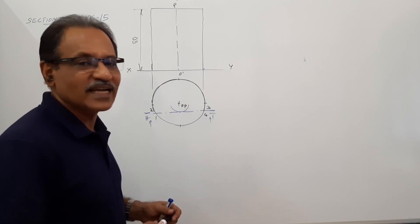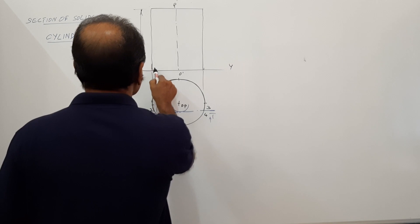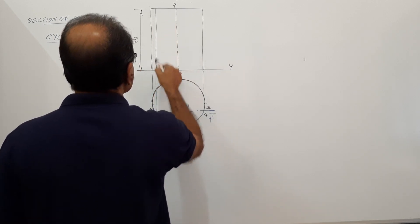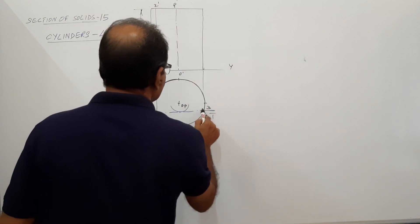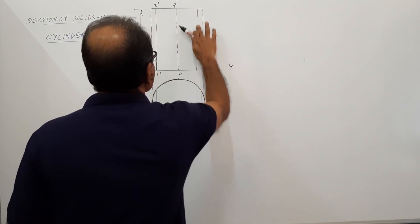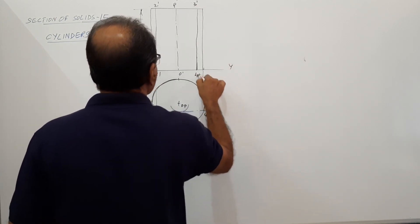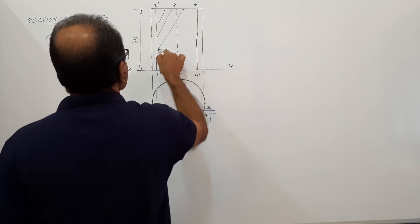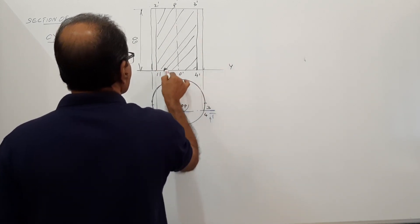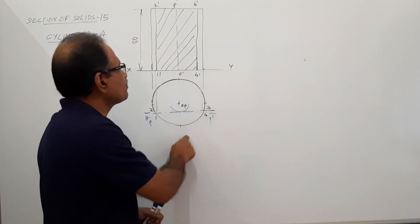Now you have to draw the sectional elevation. What do you do? Project 1, 2, up. Exactly on top of that is 2 dash. Project this up. 3 dash and 4 dash. Hatch this. What have you completed? You have completed the sectional elevation. This is sectional plan, this is sectional elevation.